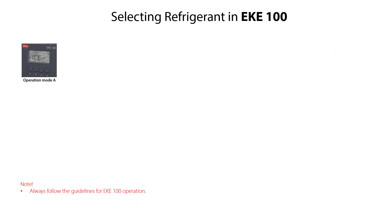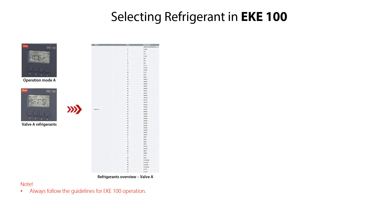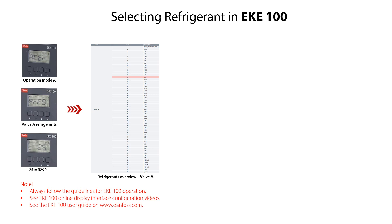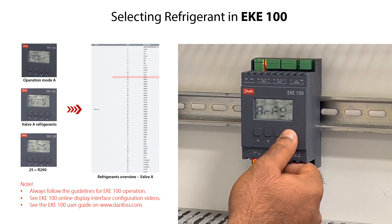The next step is to select a suitable valve A refrigerant. In this example we select R290. From the ACTR mode, press the arrow down key to access the valve A refrigerants, specified as ARFG. Press the enter key to access the available refrigerants. Press the arrow up or down keys to find and select the needed refrigerant. Select 25 corresponding to R290. Press the enter key to confirm the value and return to the ARFG mode.